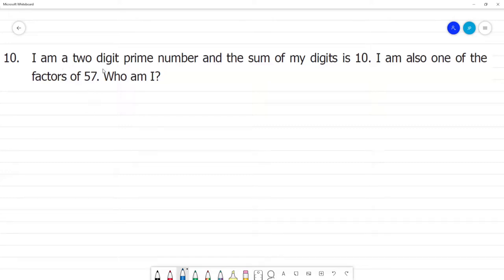I am a two-digit prime number. The question is to find a two-digit prime number where the sum of my digits is 10. I am also one of the factors of 57. Who am I?